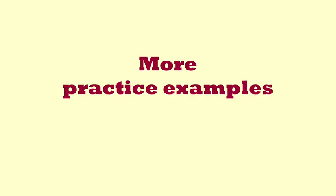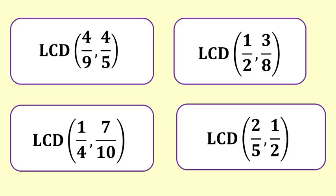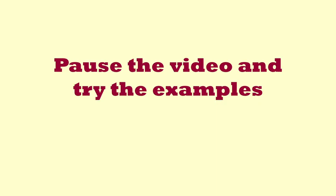Here are four more examples for you to find the lowest common denominator for: four ninths and four fifths; one half and three eighths; one quarter and seven tenths; two fifths and one half. Do try them yourself and check your answers at the end of this video.